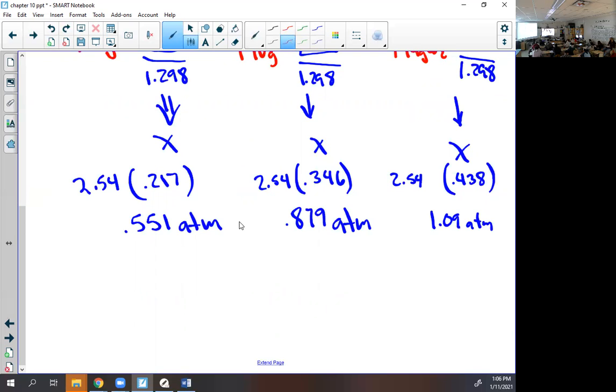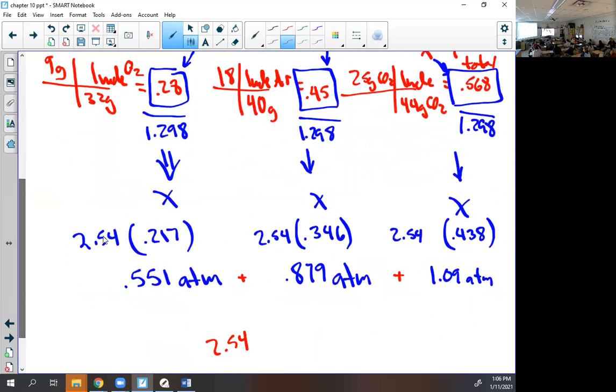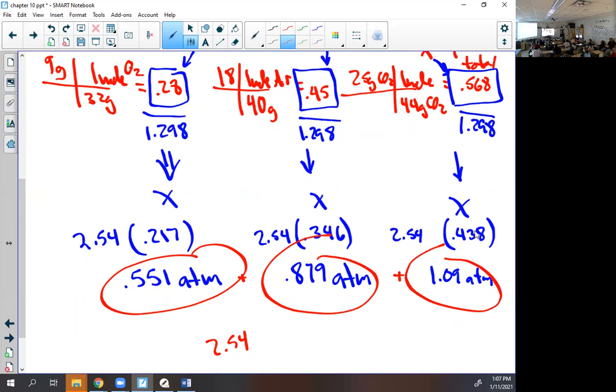When you do this problem, you should always check. How would you check to see if you're right? When you add these together, they better equal 2.54, which they should. So now we've got the partial pressure of each gas using the mole ratio and the total pressure.